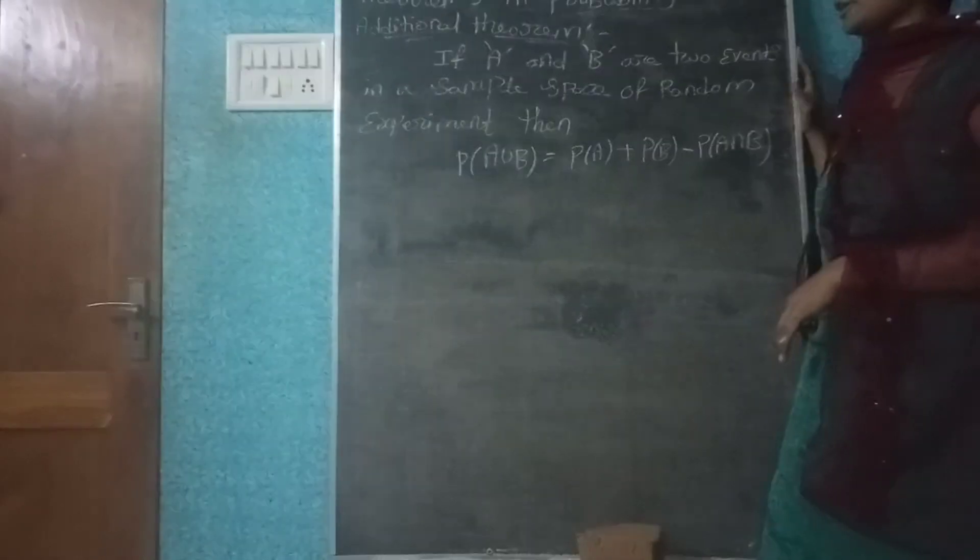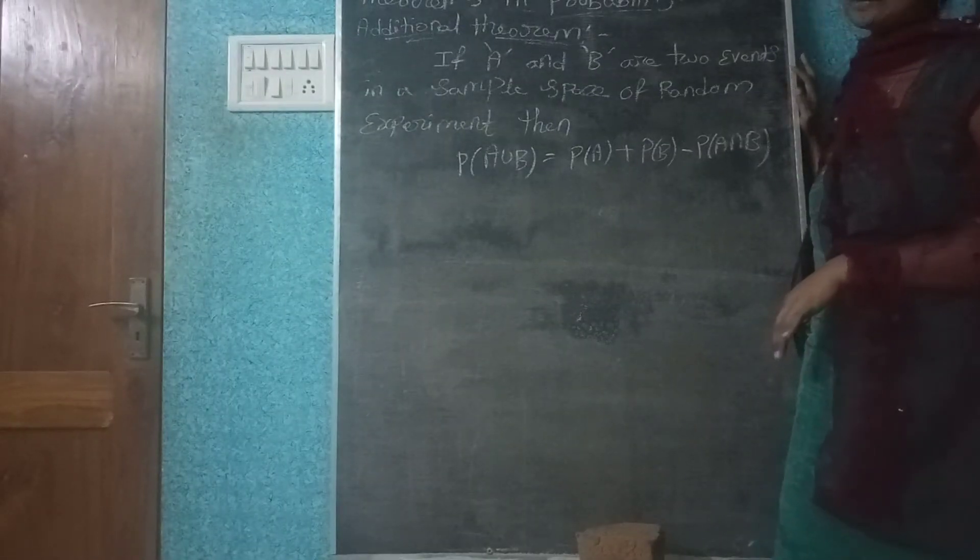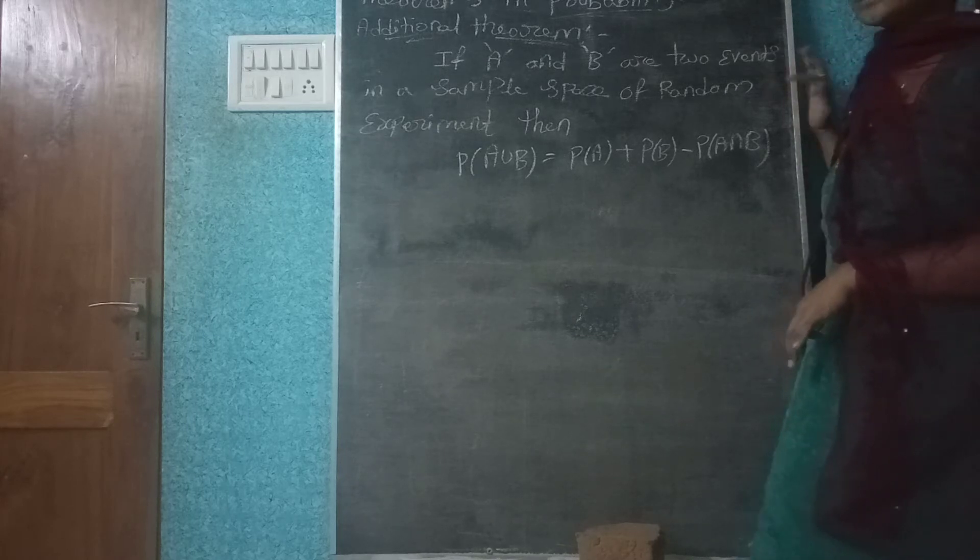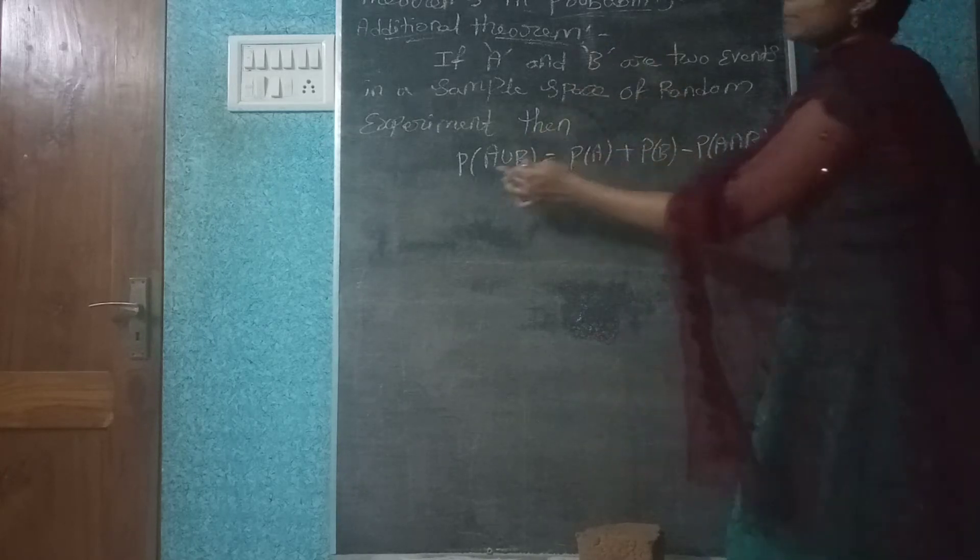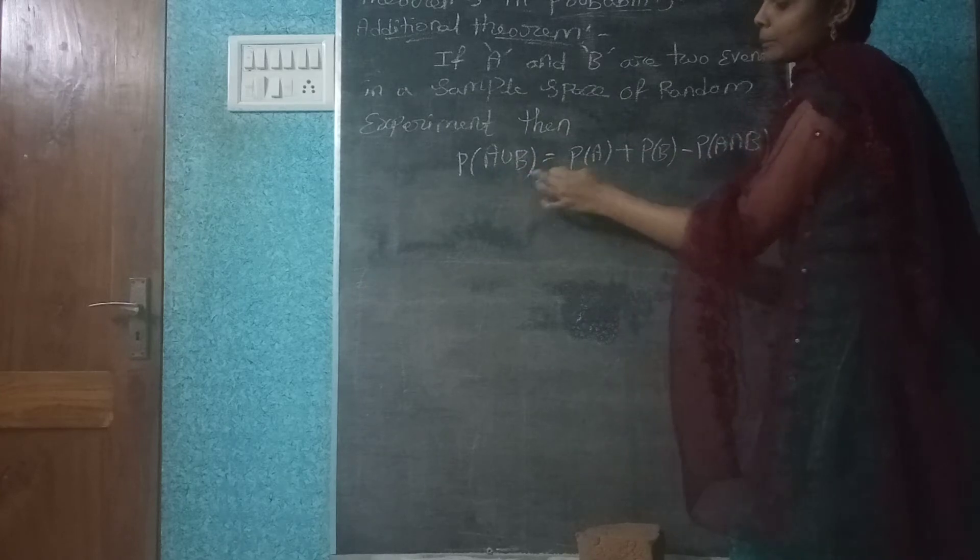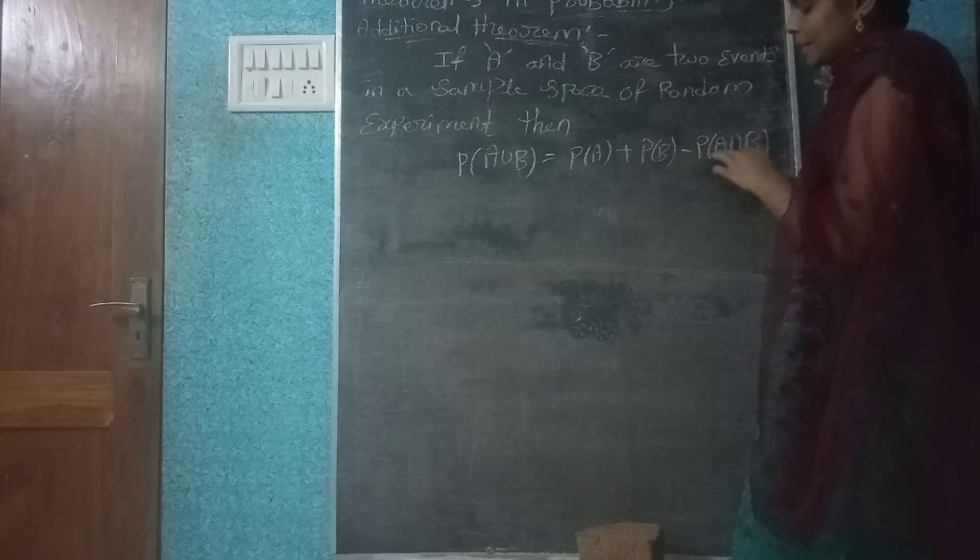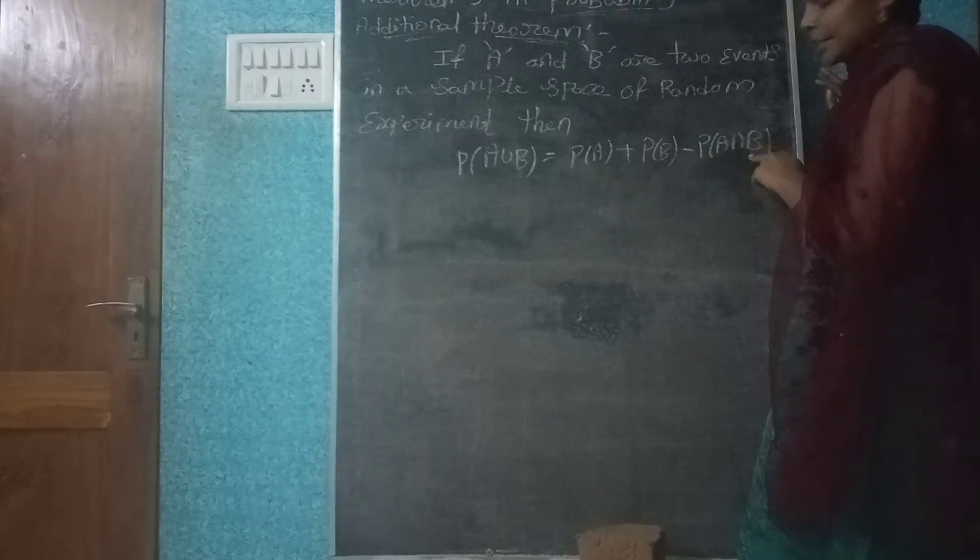A and B are two events, then the probability of A union B is equal to P of A plus P of B minus P of A intersection B.